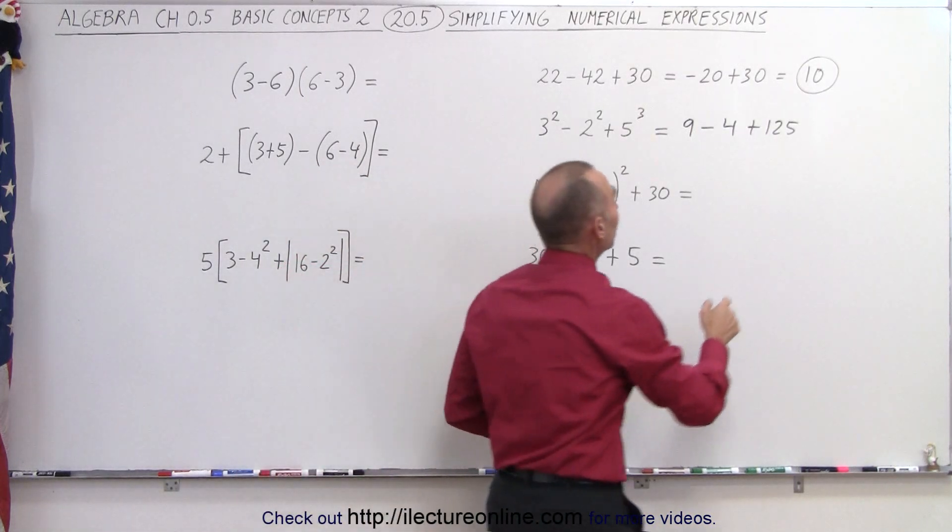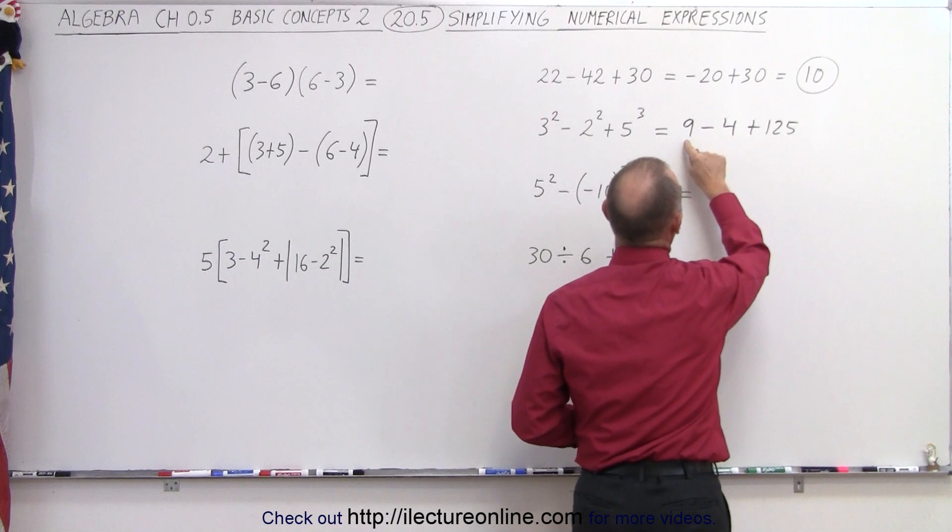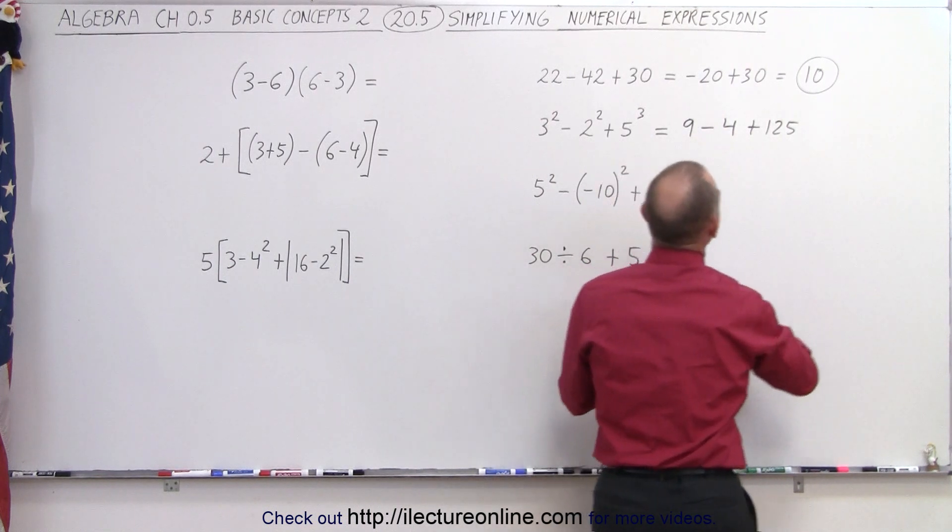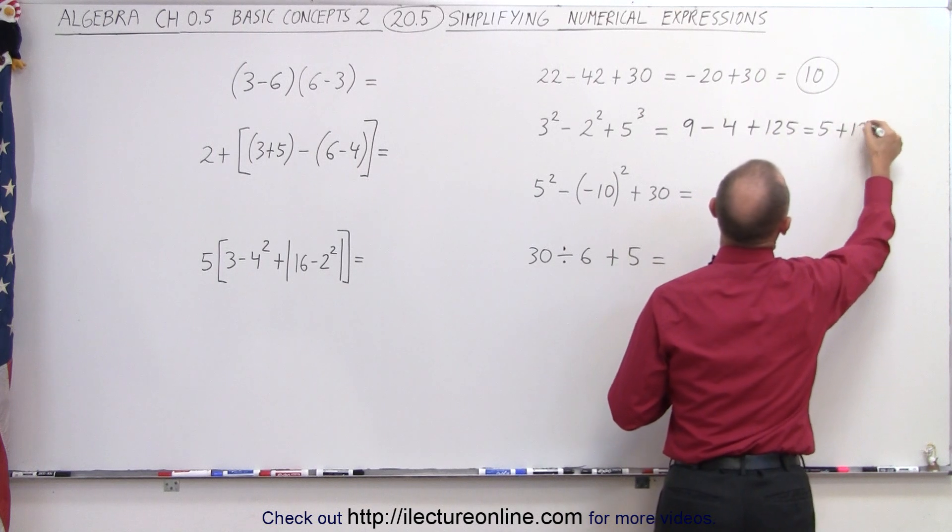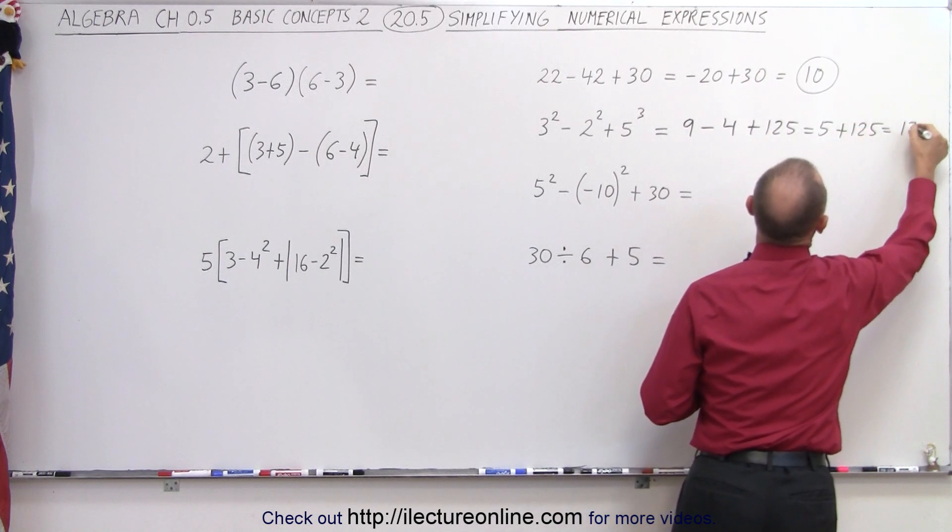Then the next thing we do, these are equal priorities, so we start from left to right. 9 minus 4 is equal to 5. And we add 125 to that, with the solution being 130.